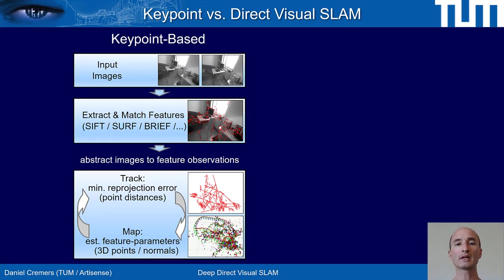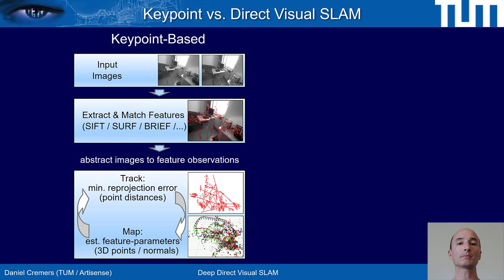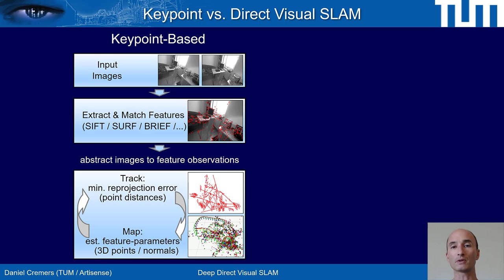Following in Krupa's footsteps, the research community in computer vision developed what I call the classical pipeline of camera-based reconstruction, starting in the 70s and 80s and refined over the last decades. This pipeline takes two consecutive images, extracts points, and associates them with descriptors like SIFT, SURF, BRIEF, or deep learning-based descriptors to compute correspondences. Once we have corresponding point pairs, we recover camera motion and 3D structure by techniques like bundle adjustment.